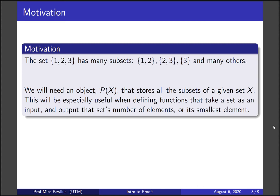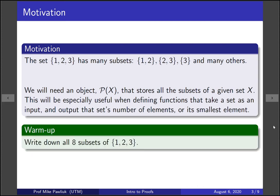Now, this object is pretty confusing for a lot of people. It's quite abstract and it uses sets of sets of sets. So let's start with a warm-up: write down all eight of the subsets of the set {1, 2, 3}. I've already given you three sets above, so write down the other five. Take a moment to do this now.